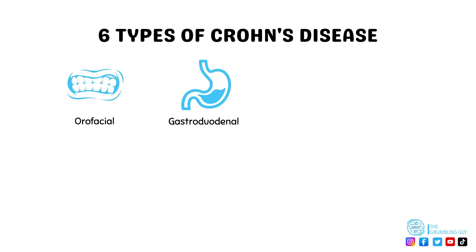Gastroduodenal Crohn's disease is a type of Crohn's that affects the esophagus, stomach, and the duodenum of the small intestine. However, it is not that common and can occur in addition to other parts of the digestive system being affected. Small bowel Crohn's disease is when Crohn's occurs in either the duodenum or ileum of the small intestine.